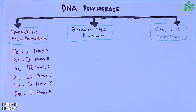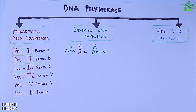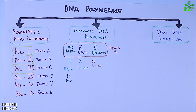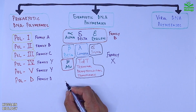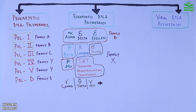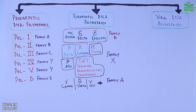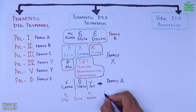Then we have eukaryotic DNA polymerases: alpha, delta, and epsilon from family B of DNA polymerases. Next are beta, lambda, sigma, mu, and TDT polymerases from family X of DNA polymerases. Moving further we have gamma, theta, and nu polymerases from family A. And we also have eta, iota, and kappa DNA polymerases from family Y.